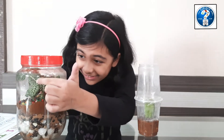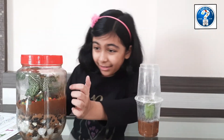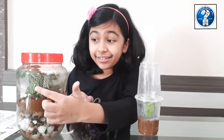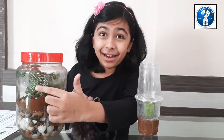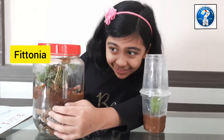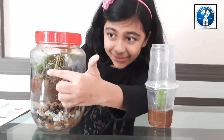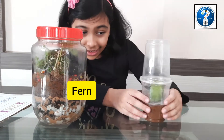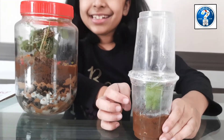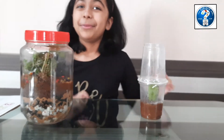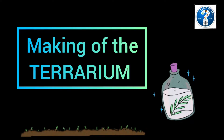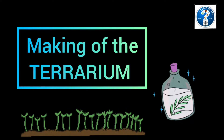I just wanted to tell you some more information. This plant here is a nerve plant. It is called phytonia. And this plant here is called fern. And this plant is called a snake plant. Hope you enjoy. Thank you. Bye.